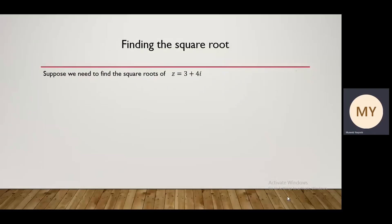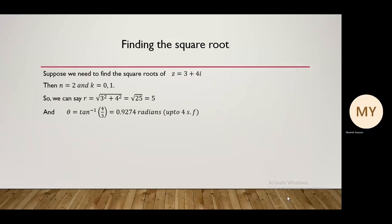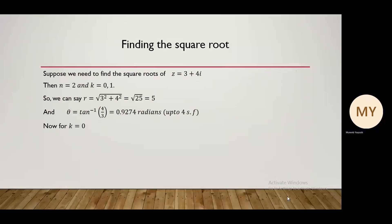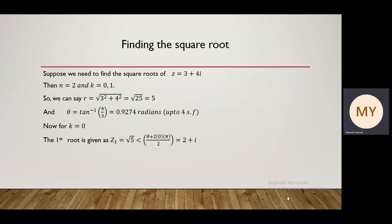Finding the square root: suppose we need to find the square roots of z equals 3 plus 4i. We identify n equals 2 and k equals 0 or 1. So r equals root of 3 squared plus 4 squared, that is root of 25, which equals 5. Theta equals tan inverse of 4 upon 3, which equals 0.9274 radians. For k equals 0, z1 equals root of 5, argument (theta plus 0) divided by 2, giving 2 plus i as the first root.